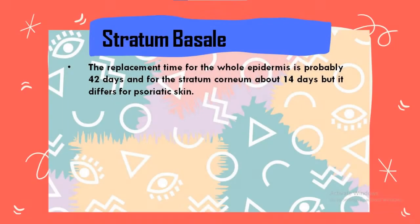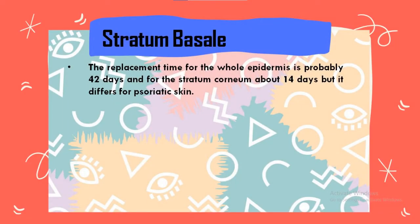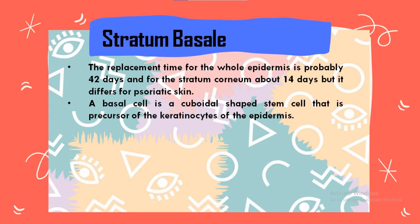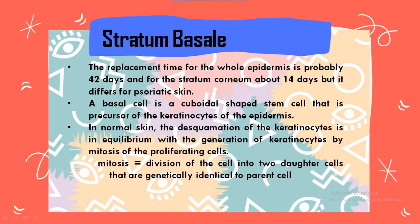The replacement time for the whole epidermis is probably 42 days, and for the stratum corneum about 14 days, but it differs for psoriasis skin. Basal cells are cuboidal-shaped stem cells that are precursors of keratinocytes of the epidermis. In normal skin, the desquamation of keratinocytes is in equilibrium with the generation of keratinocytes by mitosis. Mitosis means division of cells into two daughter cells that are genetically identical to the parent cells.